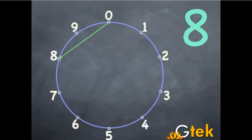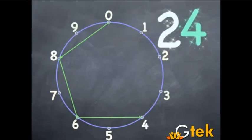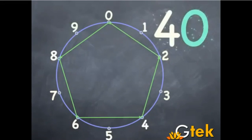0 to 8, that is 8, then 8 to 8 is 16, 24, 32, and 40.